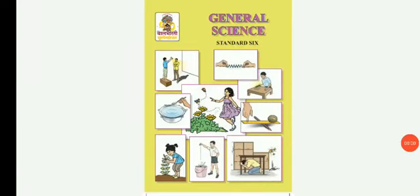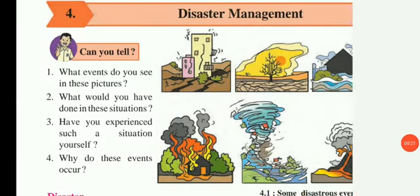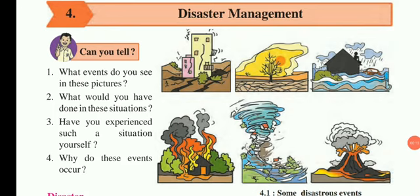Welcome to SLD online class, standard six general science. Our fourth chapter is disaster management. What is a disaster? A disaster is a sudden event that causes large-scale damage to properties and society. It is naturally caused by nature — like earthquakes, floods — and it causes many lives lost and large damage to property.